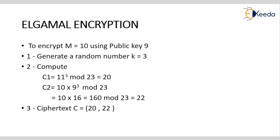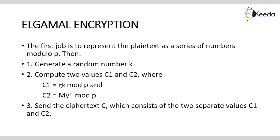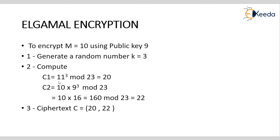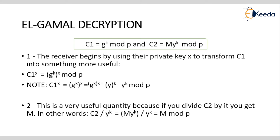For C1: G to the power of K mod P = 11 to the power of 3 mod 23, which gives C1 = 20. For C2: M times Y to the power of K mod P = 10 times 9 to the power of 3 mod 23, which gives C2 = 22. So the ciphertext pair is (20, 22).